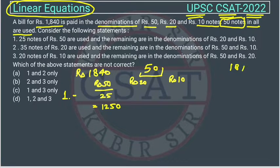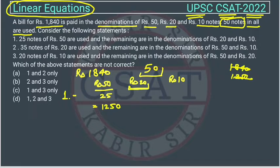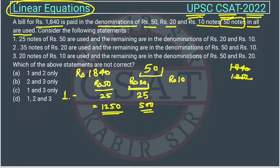The remaining amount needed is 1840 minus 1250. We have 25 remaining notes, and if we allot all 25 to rupee 20 notes — the highest remaining denomination — that gives 25 into 20 equals 500 rupees. So the total is 1250 plus 500 equals 1750, which is not equal to 1840. So this case is not possible.